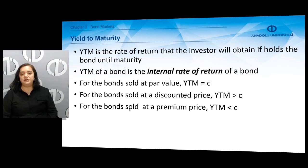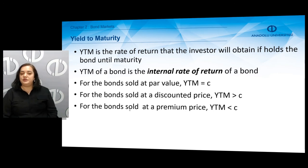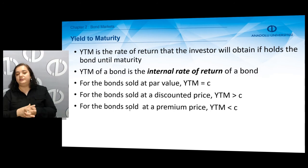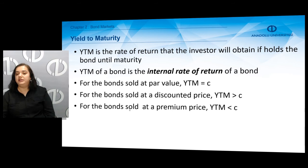You can think of yield to maturity as the rate of return that the investor will obtain if he or she holds the bond until maturity — it is like an expected rate of return. We can also compute yield to maturity by computing the internal rate of return of a bond. For bonds sold at par value, if the price equals the par value, yield to maturity equals the coupon rate. For bonds sold at a discounted price — if the price is below par value — the yield to maturity is higher than the coupon rate, because the price is discounted, resulting in a higher expected return.